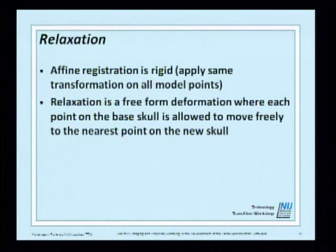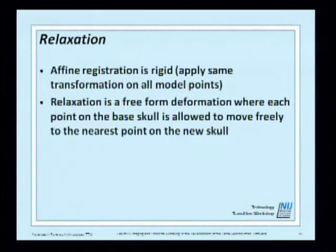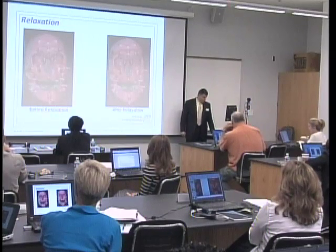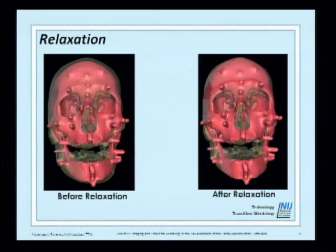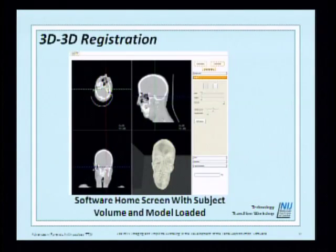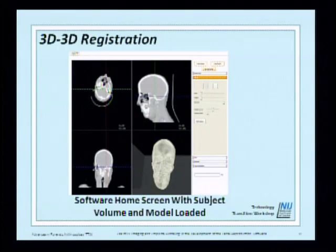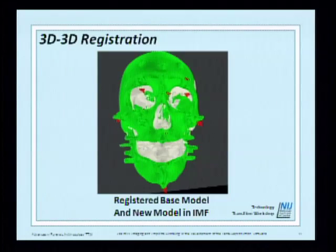Affine registration is a rigid transformation applied to all model points. Relaxation is a free-form deformation where each point on the base skull is allowed to move freely to the nearest point on the new skull — this brings the two models very close together. You can see before and after relaxation: it's now very precise on the specific patient. This is our 3D-to-3D registration software, built for this project to use fiduciary markers in soft tissue estimation.